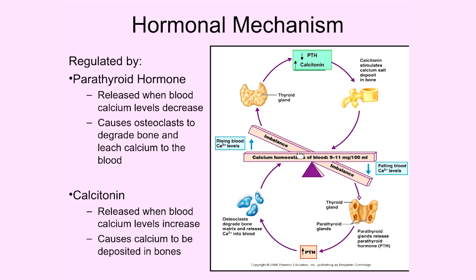On the other side of the graph, if there are sufficient or excess calcium levels in the blood — say you've eaten a very calcium-rich diet — the thyroid gland releases a hormone known as calcitonin, while release of parathyroid hormone from the parathyroid gland decreases. Calcitonin stimulates the deposit of calcium into the bones, which strengthens the bones and brings blood calcium levels back to where they need to be so the heart, diaphragm, and all other muscles can contract properly.